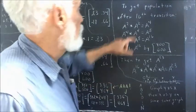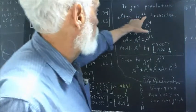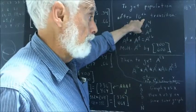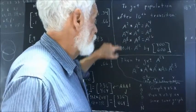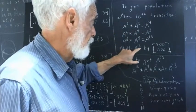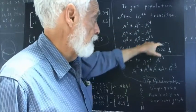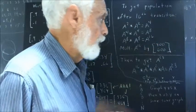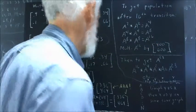Then, if we want to get the population after the sixteenth transition, we would do this, this, and this, and then we multiply A to the sixteenth by our original population vector.